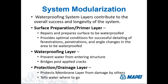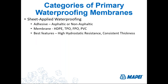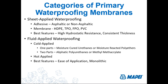Let's talk about the waterproofing layer — the categories of membranes out there. There are three. First, sheet applied waterproofing, which contains an adhesive and then usually a backer of one form of plastic — either high density polyethylene, TPO, FPO, or PVC. All forms of plastics are very durable, very resistant to hydrostatic head, and because they're made in a manufacturing facility, they are of consistent thickness.